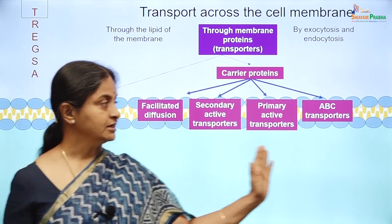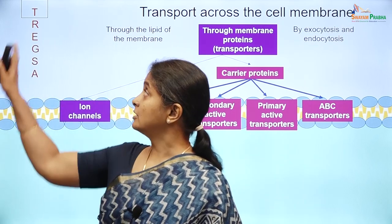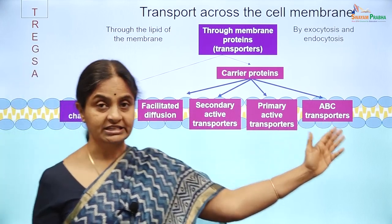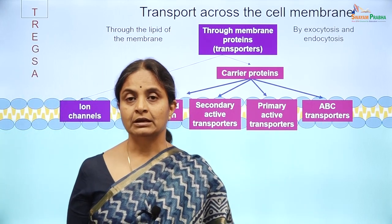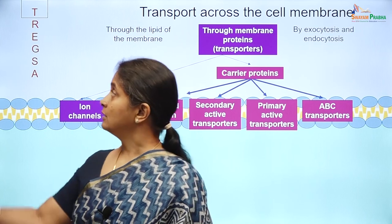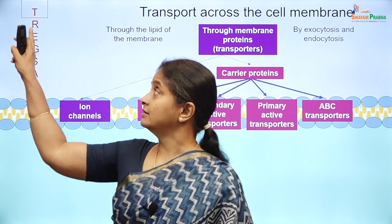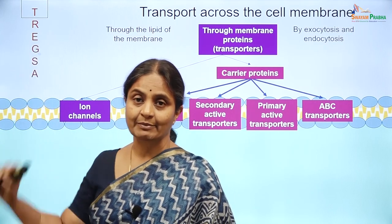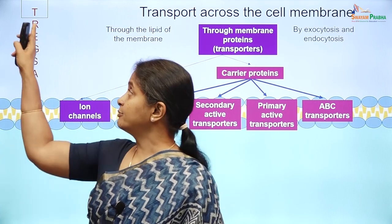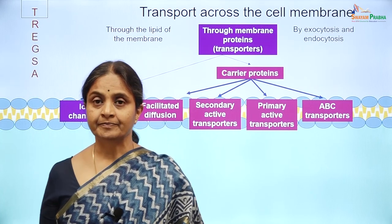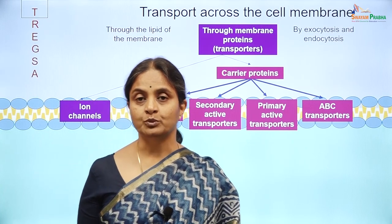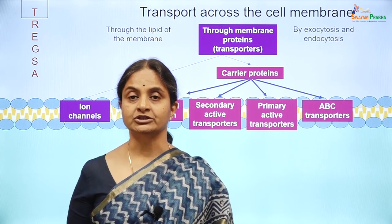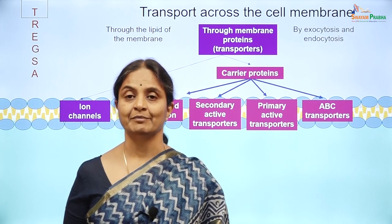We are coming to the end of the session. We have considered details of the transporters on the cell membrane — all types. Our next consideration will be the R, E, and G components of the TREXA mnemonic: receptors, enzymes, and G proteins on the cell membrane, covered in the next module on cell signaling mechanisms or second messenger signaling mechanisms.